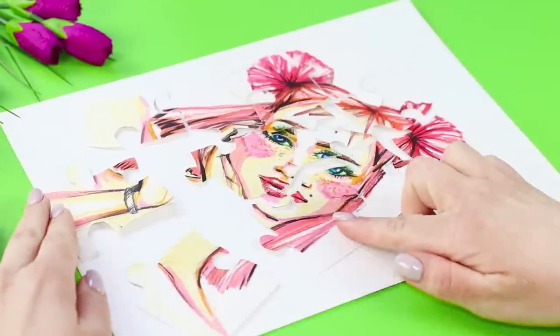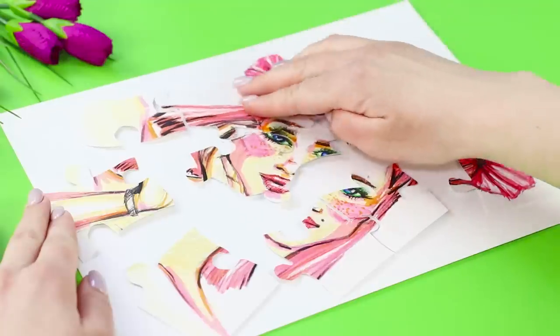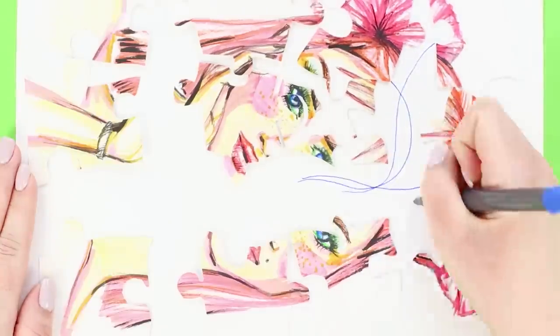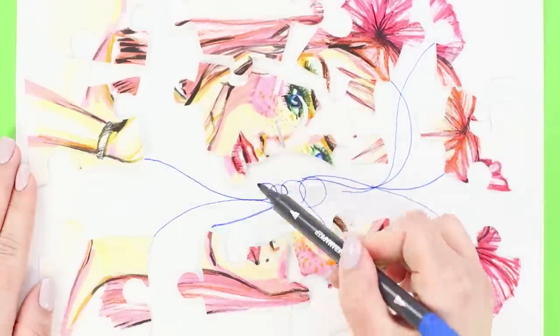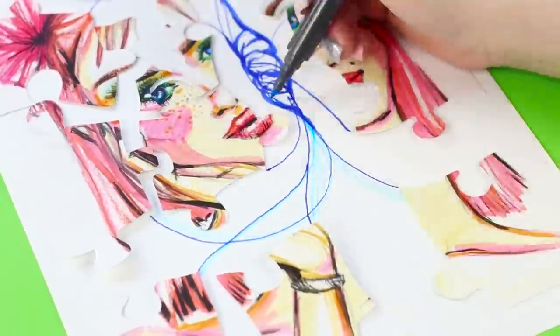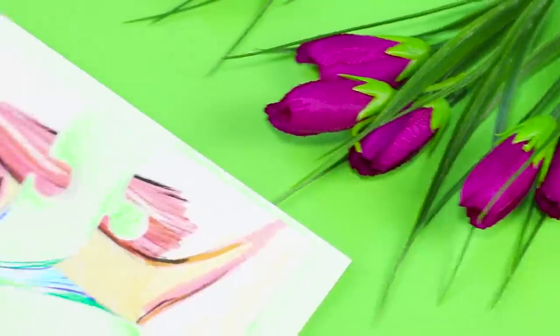Next, take a glue stick and a large blank sheet of paper. Lay out the details of the puzzle at a small distance from each other and glue them to the sheet. Draw abstract details between puzzle pieces with multicolored markers. Shade the background. Is there some secret meeting hidden in this picture? What do you see?